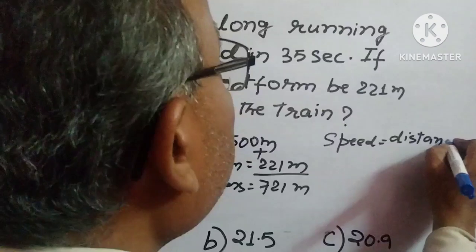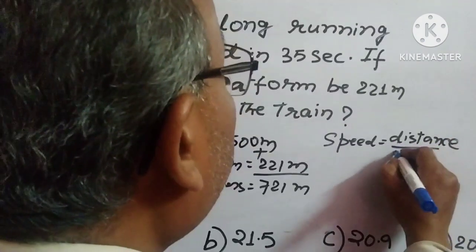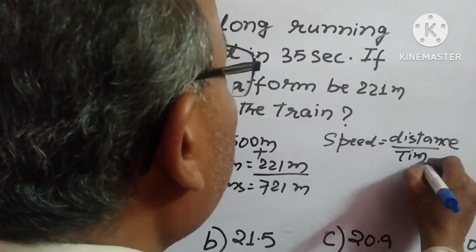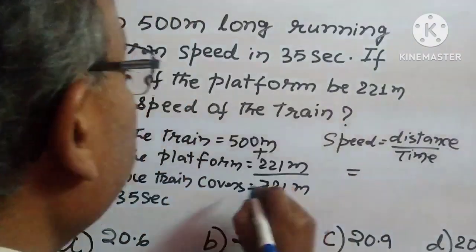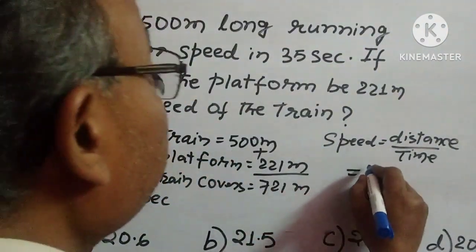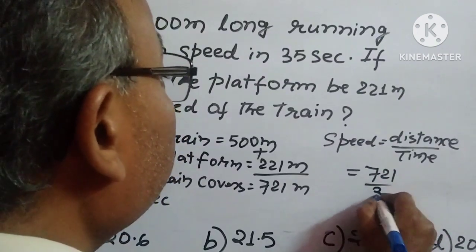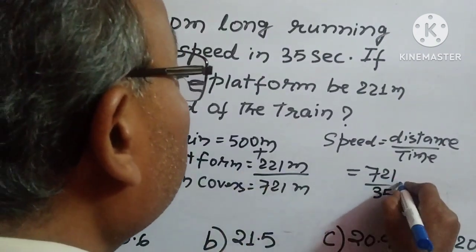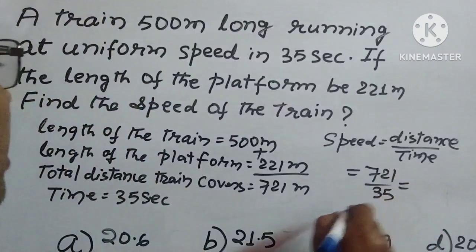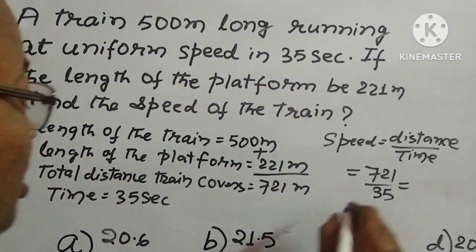So what is the distance train covers? 721. And in time 35 seconds. So 721 by 35, we'll divide 35 by 721.